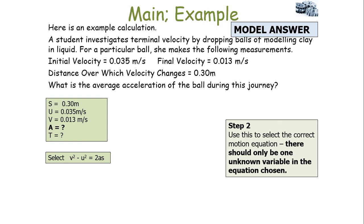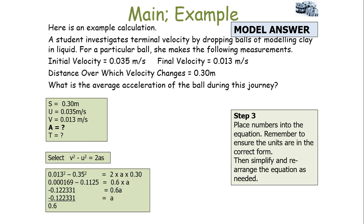Step two: select the correct motion equation. Can we use A equals V minus U over T? No, because we don't have A or T — there are two unknown variables. Can we use V squared minus U squared equals 2AS? Yes, because there is only one unknown variable, A. Substitute the numbers in, check units are correct, then simplify. Work out V squared minus U squared first — that gives minus 0.122331 — and then divide by the 2S term, which is 2 times 0.3, giving 0.6.